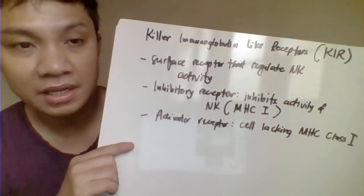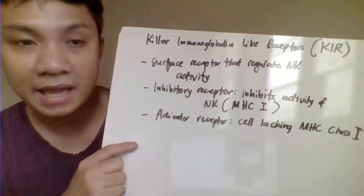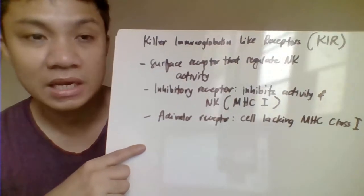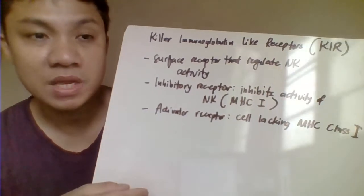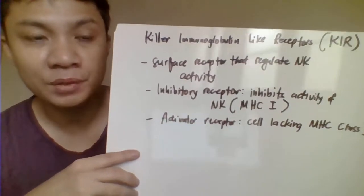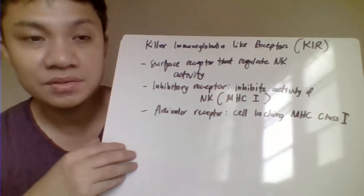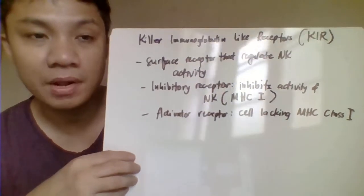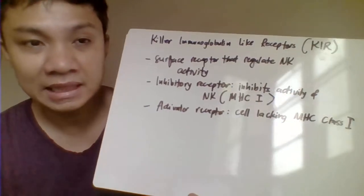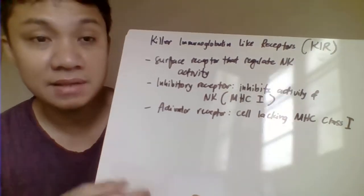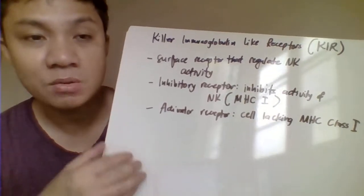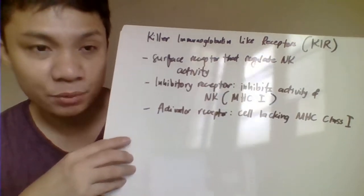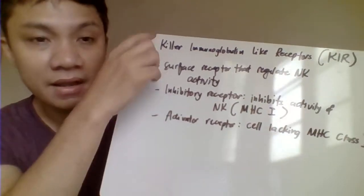Another consideration is the presence of KIR, or killer immunoglobulin-like receptors. This receptor is used by natural killer cells to recognize self from non-self. NK cells use different receptors — activatory or inhibitory. The inhibitory receptor signals to the NK cell that a cell is part of the body or a self-antigen, so the NK cell will not kill it. KIR is one example of an inhibitory receptor.